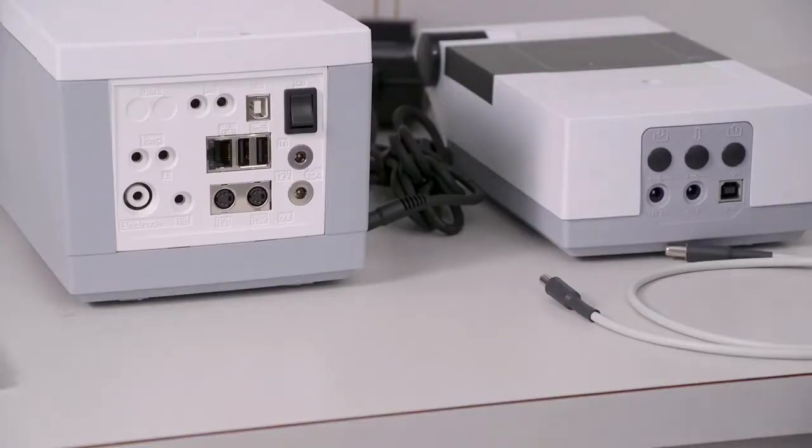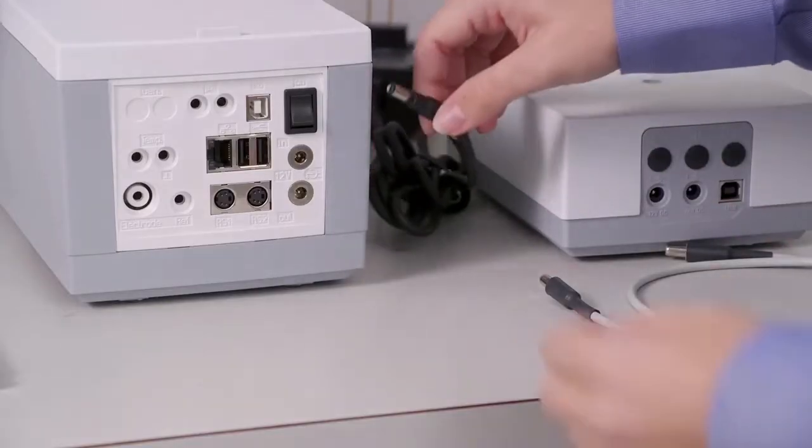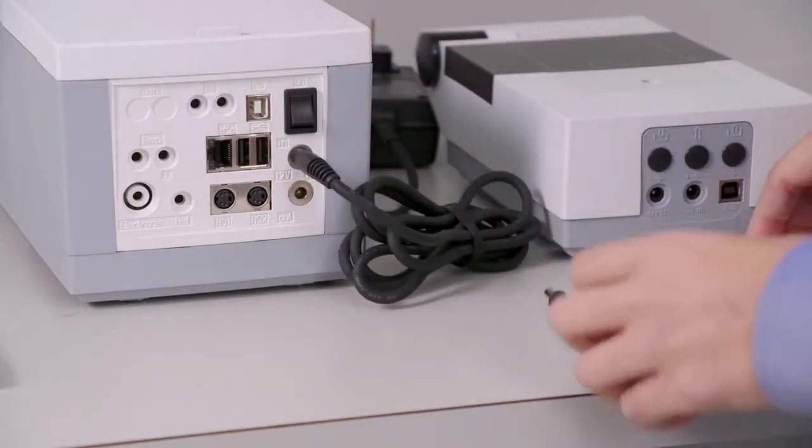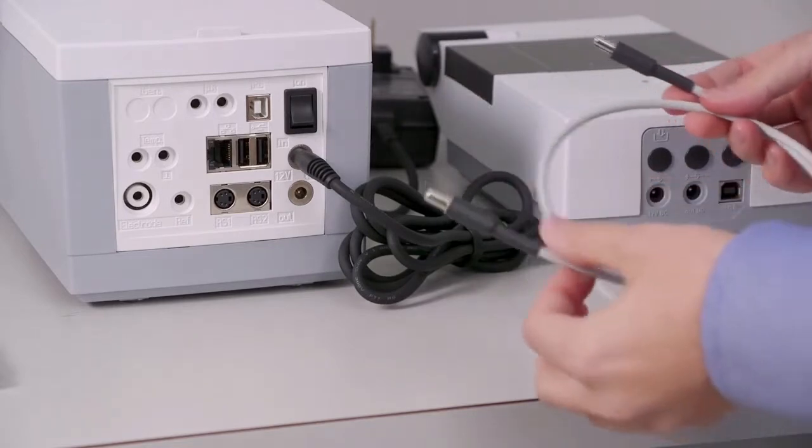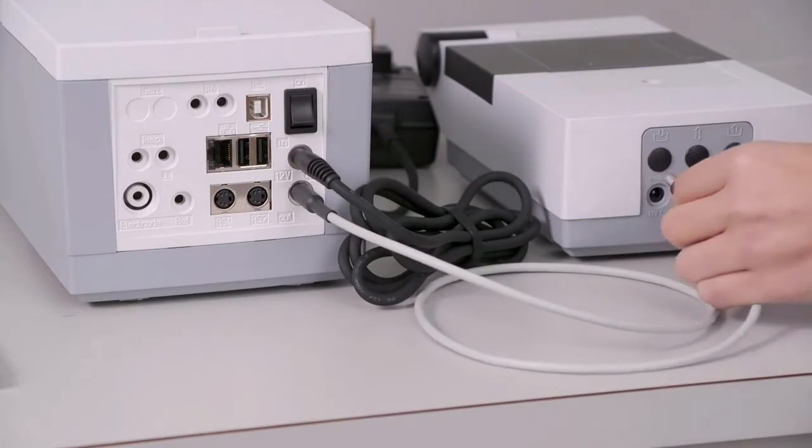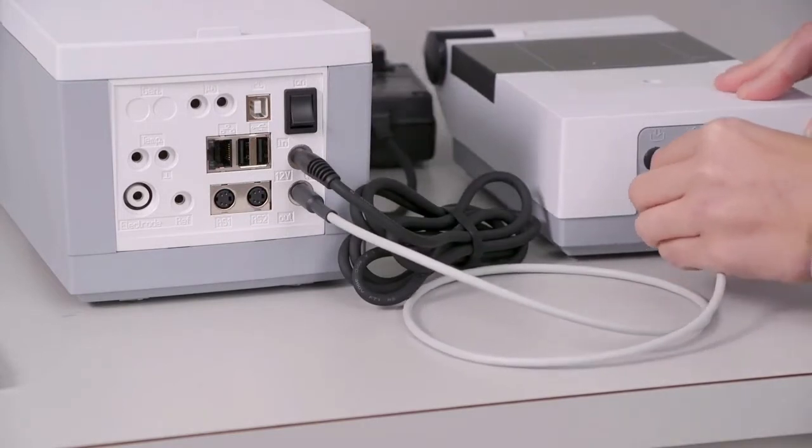We're going to take a look at the back panel of the titrator. The main power supply will get plugged into the in 12 volt port as so. The magnetic stirrer cable will get connected by one end into the out port here, and the other end into the in port of the magnetic stirrer.